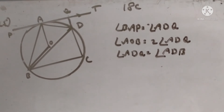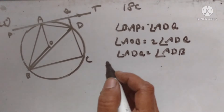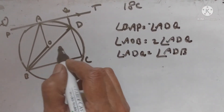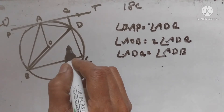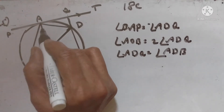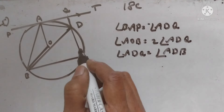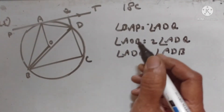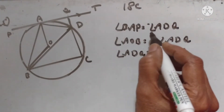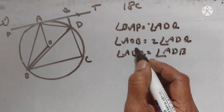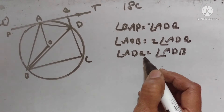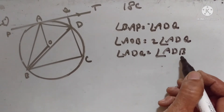Exercise 18C, 25th problem. In this figure, PAT is a tangent to the circle with center O at point A on its circumference, and is parallel to chord BC. If CDQ is a line segment, show that angle BAP equals angle ADQ, angle AOB equals 2 times angle ADQ, and angle ADQ equals angle ADB.